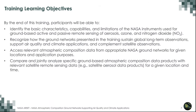By the end of this training series, participants will be able to identify the basic characteristics, capabilities, and limitations of NASA instruments used by these ground networks for active and passive remote sensing of aerosols, ozone, and nitrogen dioxide. Second, to recognize how these ground-based networks sustain global long-term observation and complement satellite-based remote sensing. Third, how to access relevant atmospheric composition data from appropriate NASA ground networks. And finally, how to compare and jointly analyze ground-based atmospheric composition data products with satellite-based remote sensing data.